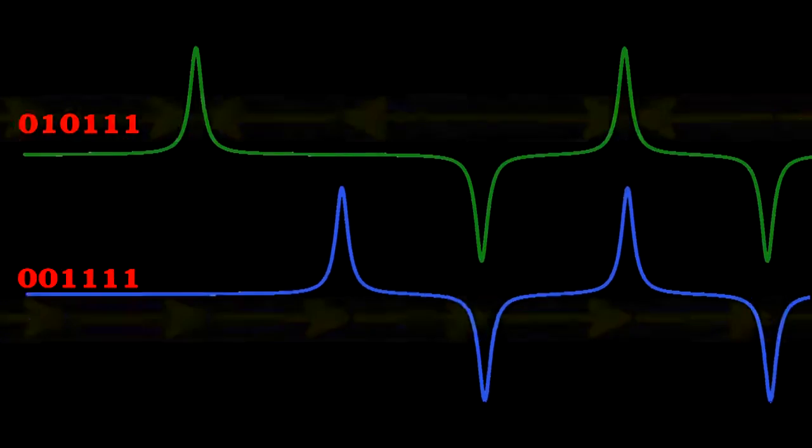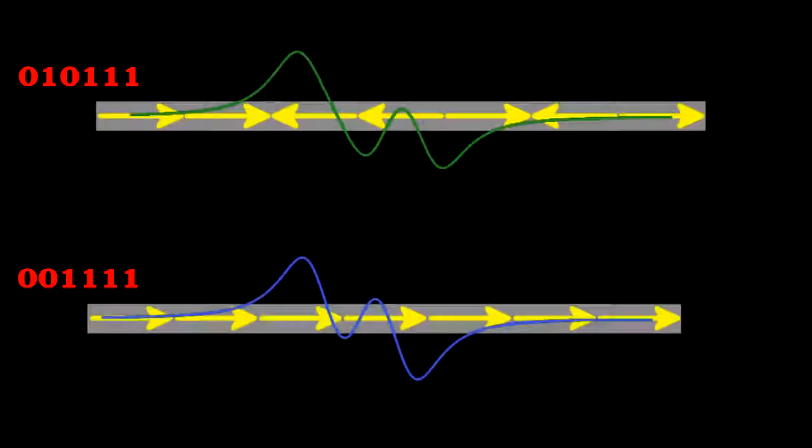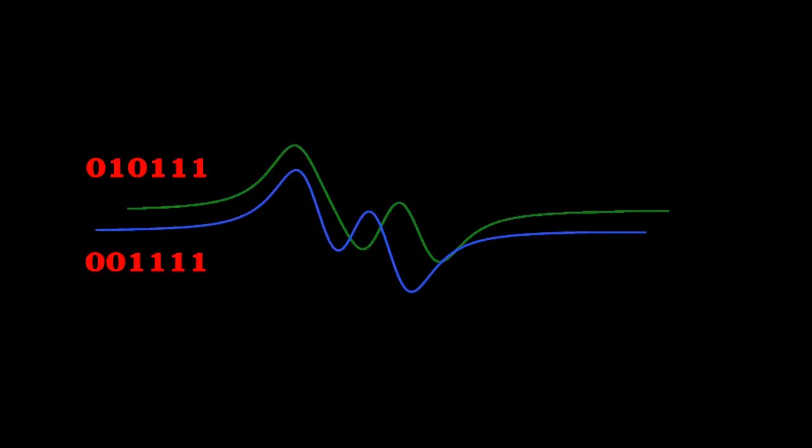Engineers, though, always work to get more and more data onto a hard drive. One way to do this is to shrink the magnetic domains, but look what happens to the voltage spikes when we do this. For each sequence, the spikes of the ones now overlap and superimpose, giving fuzzy signals. In fact, the two sequences now look very similar.